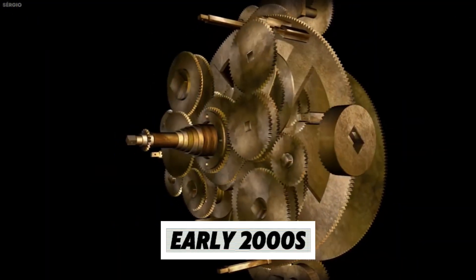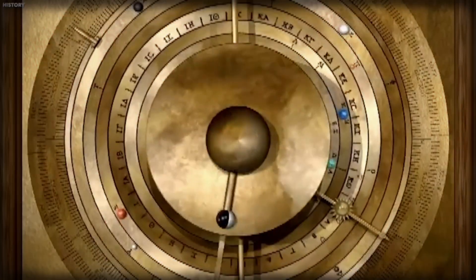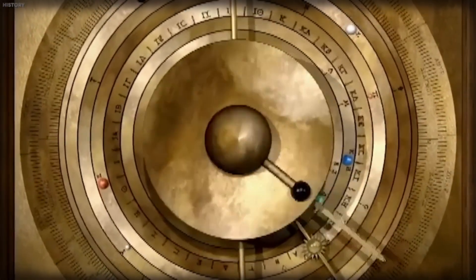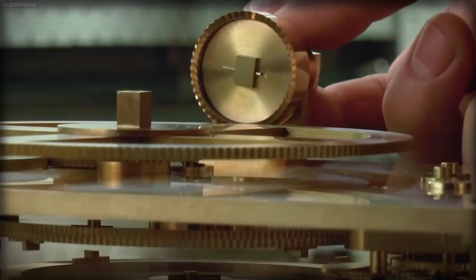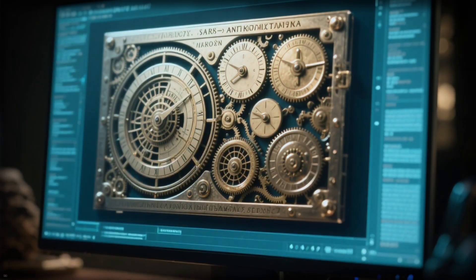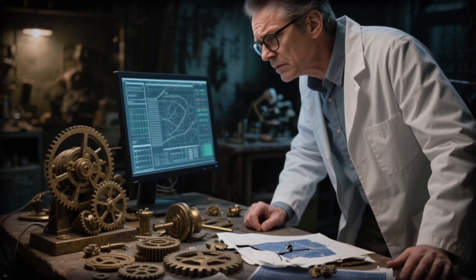By the early 2000s, the Antikythera mechanism had revealed half its story, a celestial calculator of stunning precision. For years, every attempt to rebuild it ended in contradiction. Too many gears, too little space, and too many unknowns carved into fractured inscriptions.